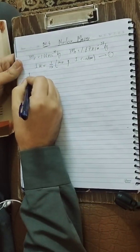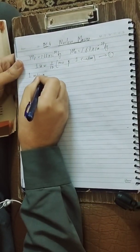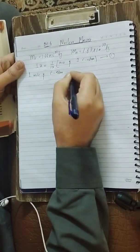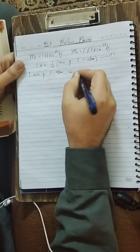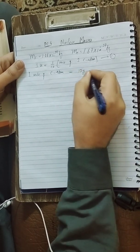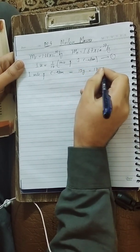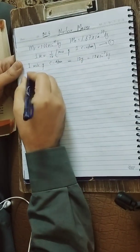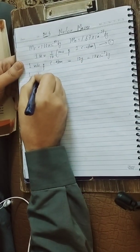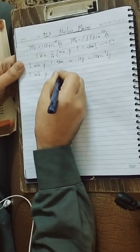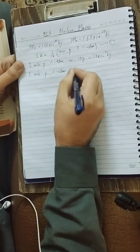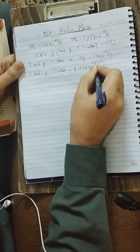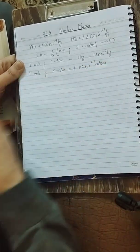We know that 1 mole of carbon atoms consists of 12 grams, or 12 × 10⁻³ kilogram. And 1 mole of carbon atoms consists of 6.02 × 10²³ atoms.